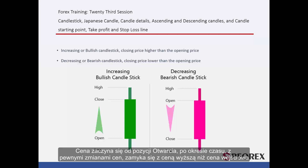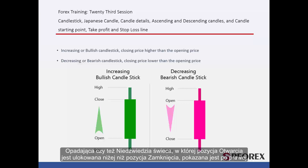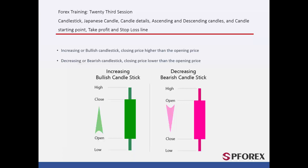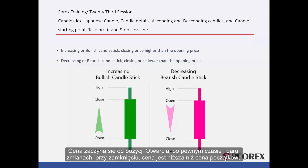Price starts from the open position, and after a period of time with some price changes, it closes with an amount higher than the entry price. In decreasing or bearish candlesticks, the open position is located higher than the closed position, as shown in the right figure. After a period of time with some changes, price closes with an amount lower than the entry price.